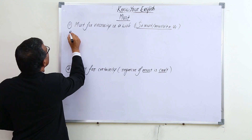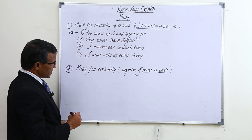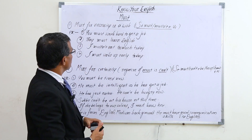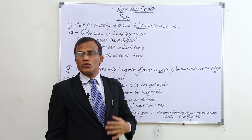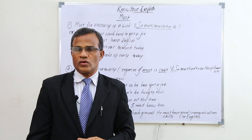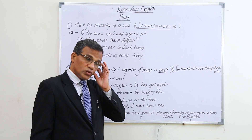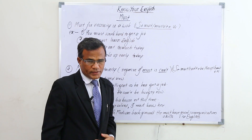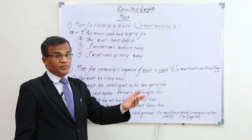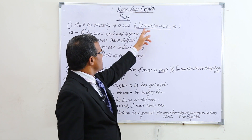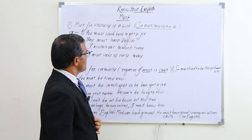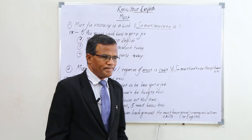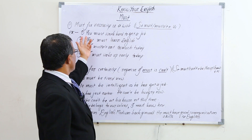Let me give examples for 'must' for necessity and 'must' for certainty. The negative of 'must' is 'can't.' Must for necessity or wish is used for personal feelings, not rules. The structure is: subject plus must or mustn't plus V1. For example: 'You must work hard to get a job.'